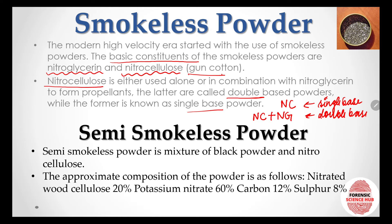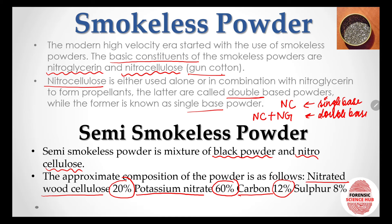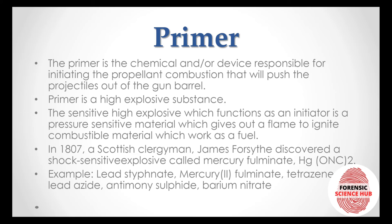Semi-smokeless powder is a mixture of black powder and nitrocellulose. The proportions are: nitrocellulose 20%, potassium nitrate 60%, carbon 12%, and sulfur 8%. Semi-smokeless powder is like a hybrid of smokeless powder and gunpowder.